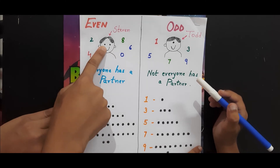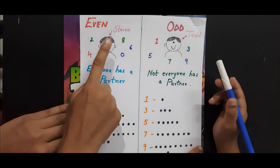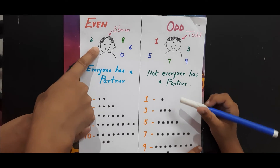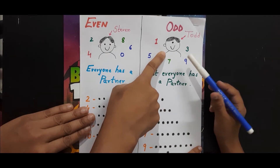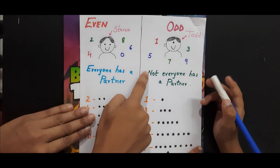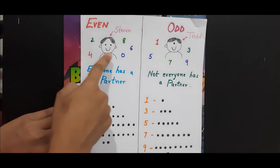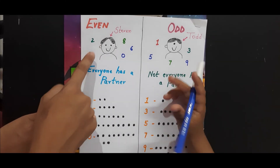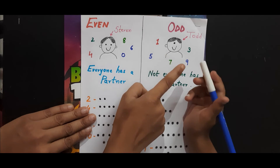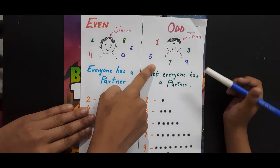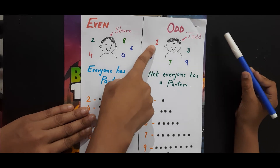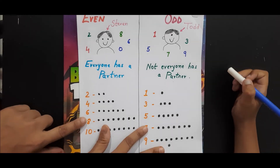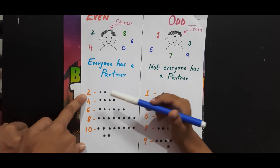Can you see the difference between Steven and Todd? Steven has a pair of eyes — two eyes, one pair — but does Todd have the same? No. Steven has one pair of ears, but Todd does not. So there are some numbers like zero, two, four, six, eight that come under even numbers — they all have partners. But there are some numbers with Todd: one, three, five, seven, nine — they don't have a partner.